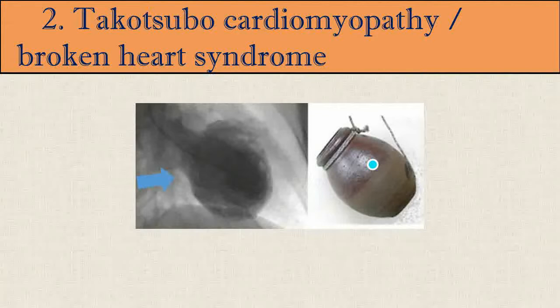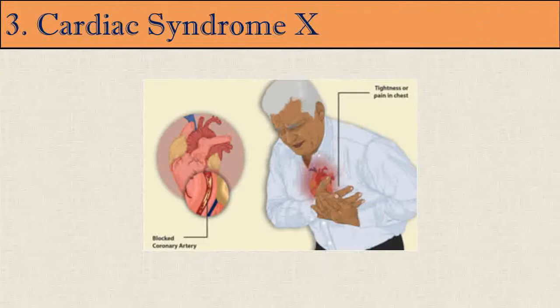Takotsubo cardiomyopathy is a type of non-ischemic cardiomyopathy in which there is a sudden temporary weakening of the muscular portion of the heart. This weakening may be triggered by emotional stress such as the death of a loved one, a breakup, rejection from a partner, or constant anxiety — leading to one of its common names, Broken Heart Syndrome.